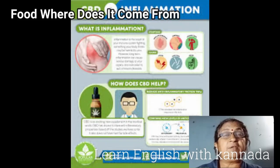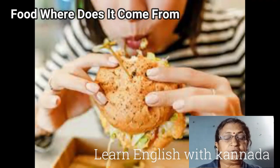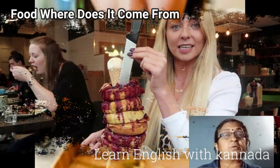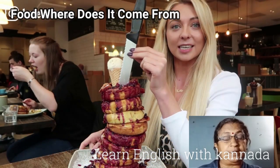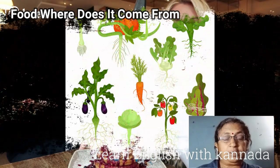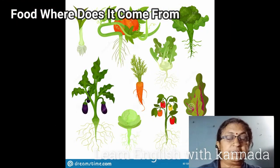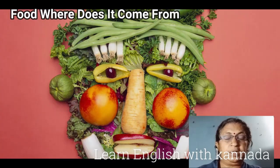We say that we get milk from animals. Animals are healthy. The animals which give us milk — we have cow, buffalo, goat. It is also goat, and sheep also will get it.